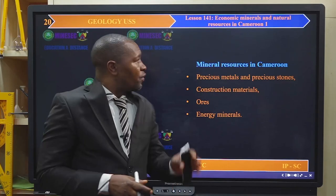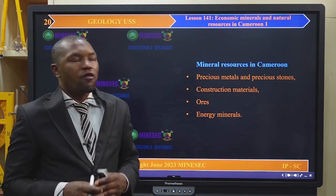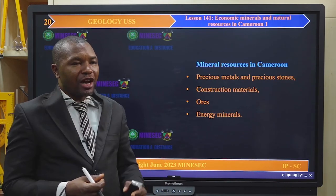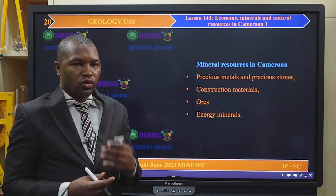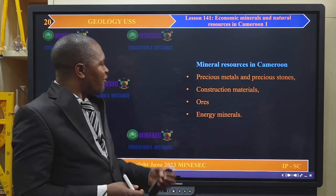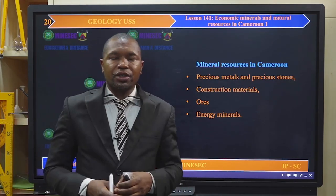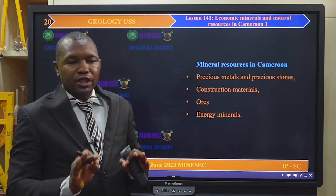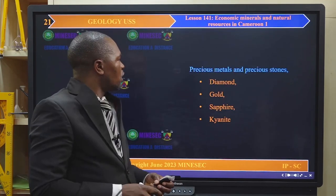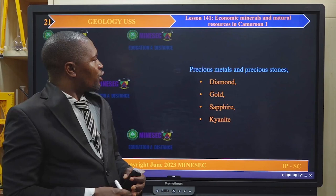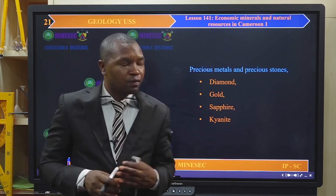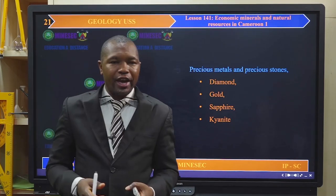Mineral resources in Cameroon are classified into four groups: precious metals and precious stones, construction materials, ores, and energy minerals. Beginning with precious metals and precious stones — the ones common in Cameroon — we have diamond, gold, sapphire, and kyanite. As we explore, we will see many more and where they are found. Diamond in Cameroon is located at the Njem series, that is the Congo Craton Njem series, which includes the Mobilong-Yokadouma area.